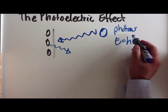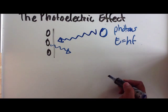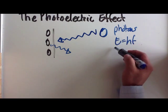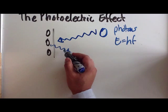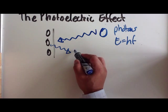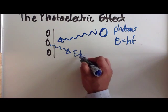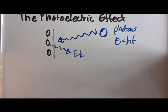If we increase the frequency of these photons, therefore we increase the energy, these electrons will have a greater kinetic energy when it is released from the surface. So the greater the frequency, the greater the energy, therefore the more kinetic energy those electrons will be released with.